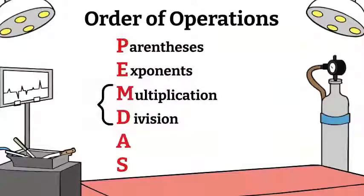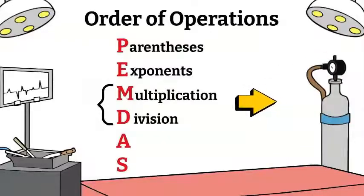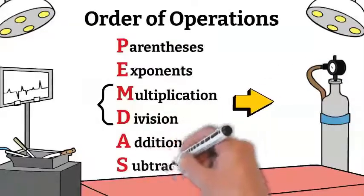Although we write the M before the D in the acronym, multiplication and division are the same level of importance, and if you see them both in one expression, you should perform them left to right. The same is true for addition and subtraction.